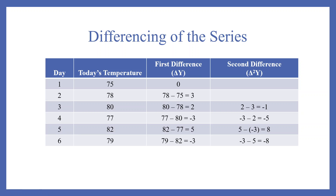If your original series is non-stationary, then we will take the first difference to make it stationary. The first difference is simple: given the original series 75, 78, 80, 77, 82, 79, we compute differences as 78 minus 75, 80 minus 78, 77 minus 80, 82 minus 77, 79 minus 82. The second difference is computed similarly from those values.